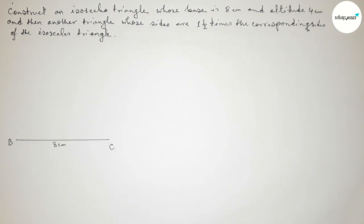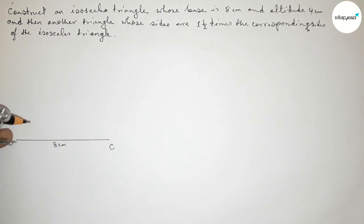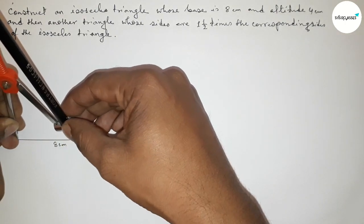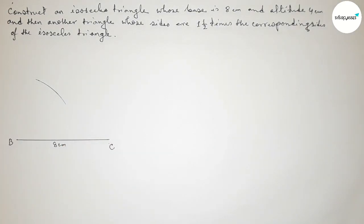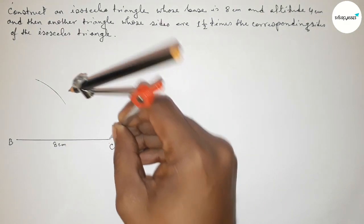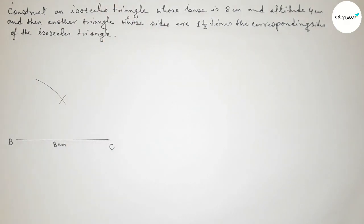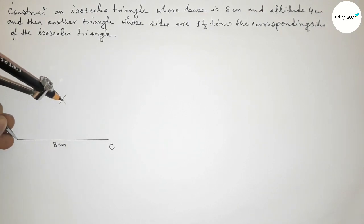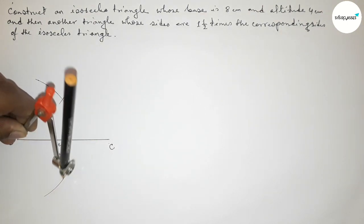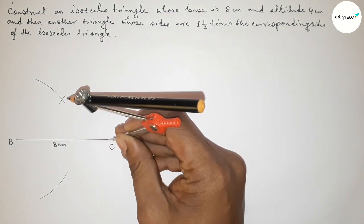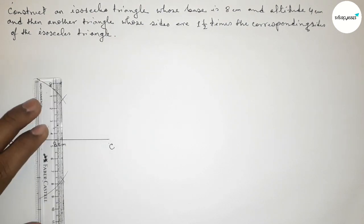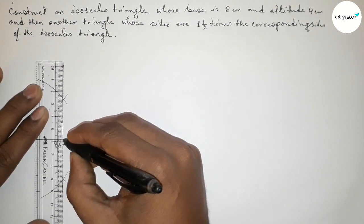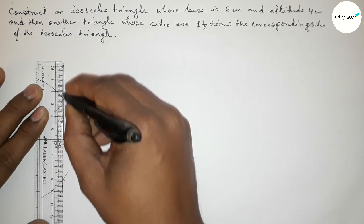Next we have to bisect the line BC perpendicularly. With the help of a compass, putting the compass on B and taking greater than half of BC, drawing an arc. Taking the same length, putting the compass on C and cutting here. Again taking the same length, drawing an arc on both sides. Now joining the perpendicular bisector line.